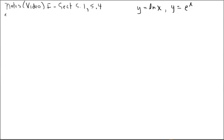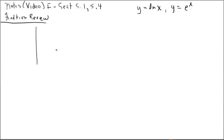Let's do a quick function review. We're going to look at the category of exponential functions and the category of logarithmic functions. To remind you about an exponential function, let's pick y equals 2 to the x. It has a base of 2 and an exponent of x — that's an exponential function. It's not a power function, where a power function has a base of x with a numeric exponent. An exponential function has a numeric base and a variable exponent.